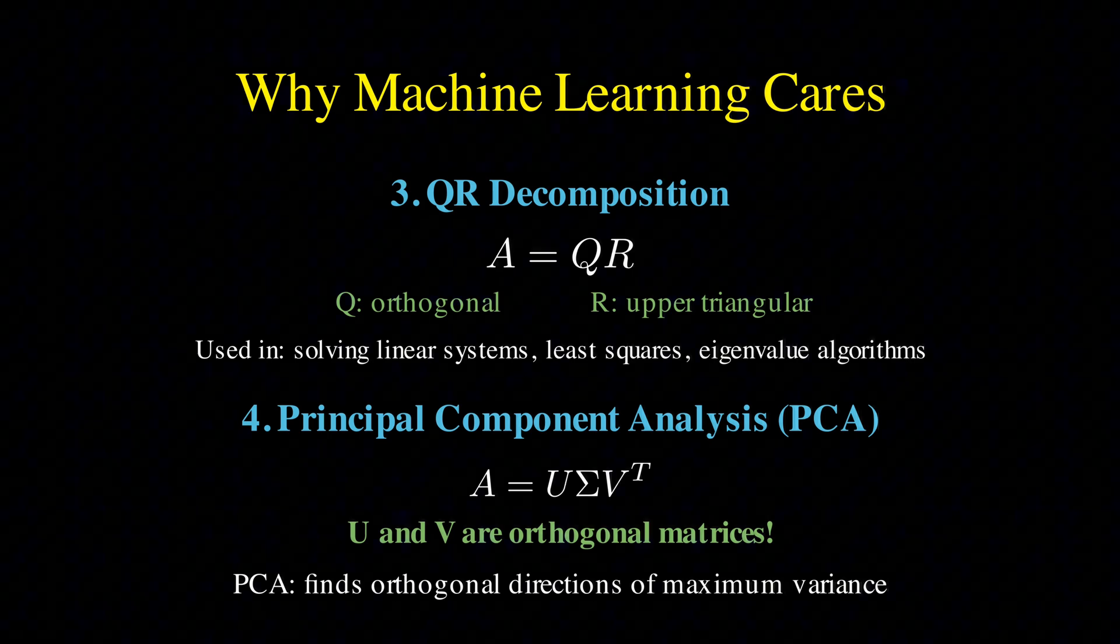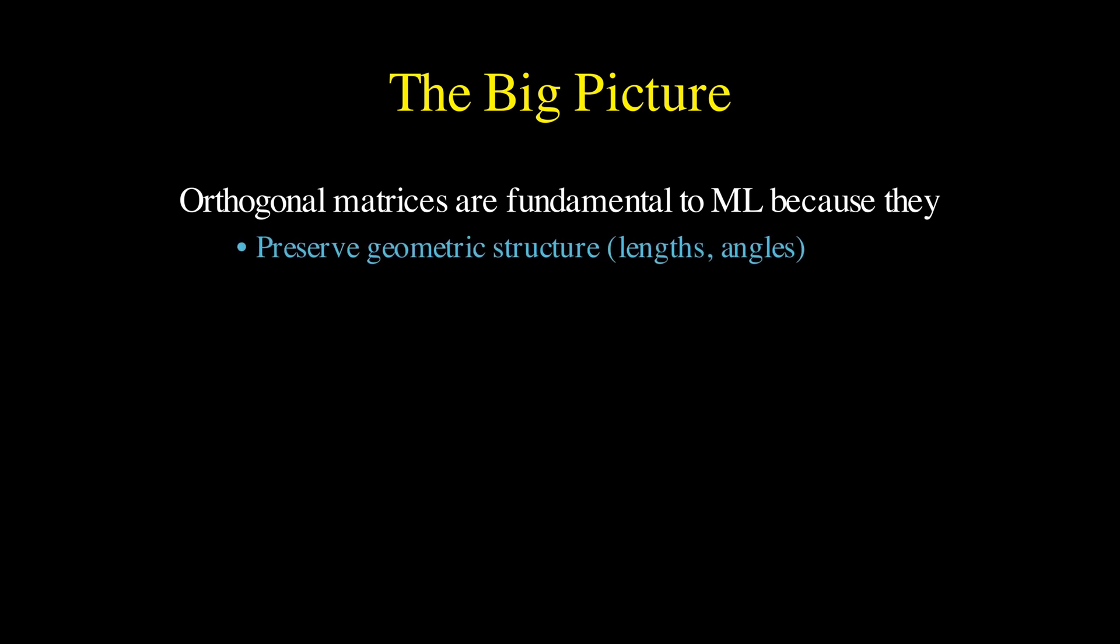Now, having said all that, let's take a step back and see the big picture. Orthogonal matrices are fundamental to machine learning because they preserve geometric structure, maintaining both lengths and angles.